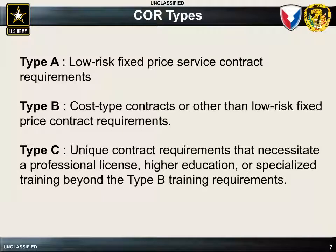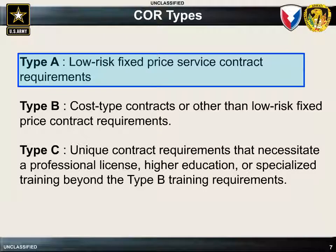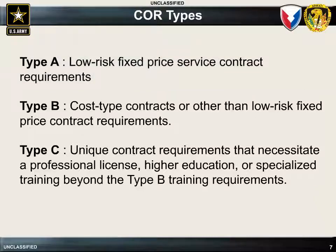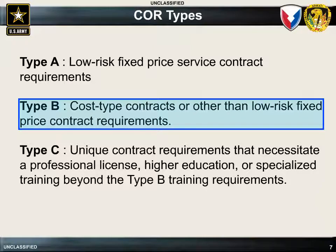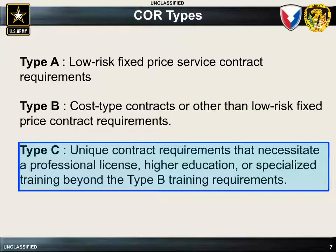CORs are divided into three categories, or types, and are designated as Type A, B, or C. A Type A COR will be appointed for contracts that are considered to be of low risk to the government and where the services on that contract are not too complex. A Type B COR will be appointed for more complex contracts which are considered to be other than low risk to the government. A Type C COR is similar to a Type B COR but has a unique contract requirement that necessitates a professional license, higher education, or specialized training beyond that of a Type B.